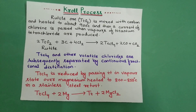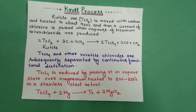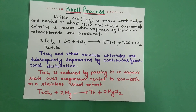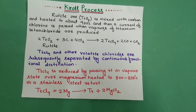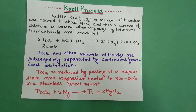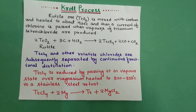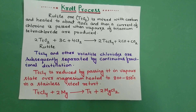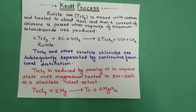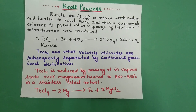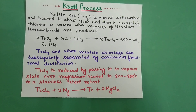TiCl₄ and other volatile chlorides are subsequently separated by continuous fractional distillation. Titanium tetrachloride is then reduced by passing it in vapor state over magnesium heated to 800–850°C in a stainless steel retort.